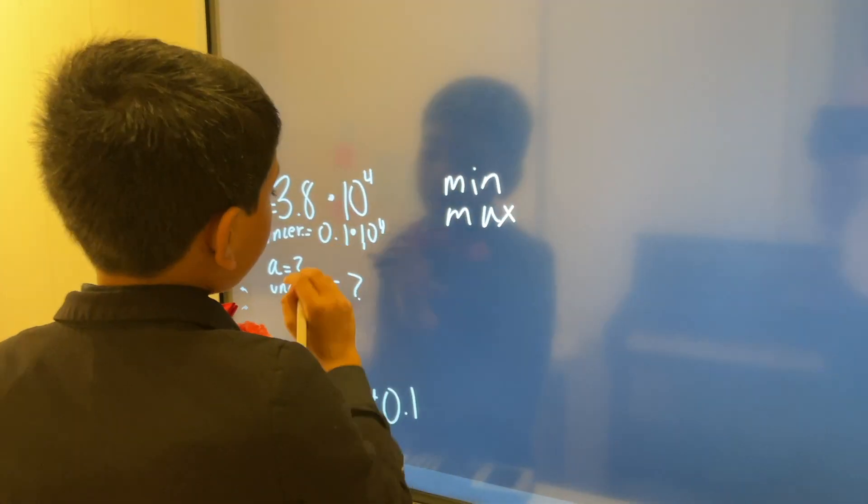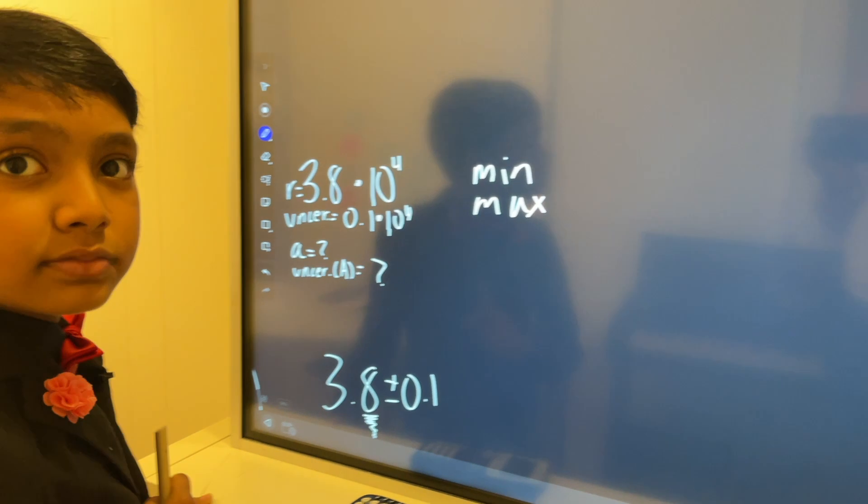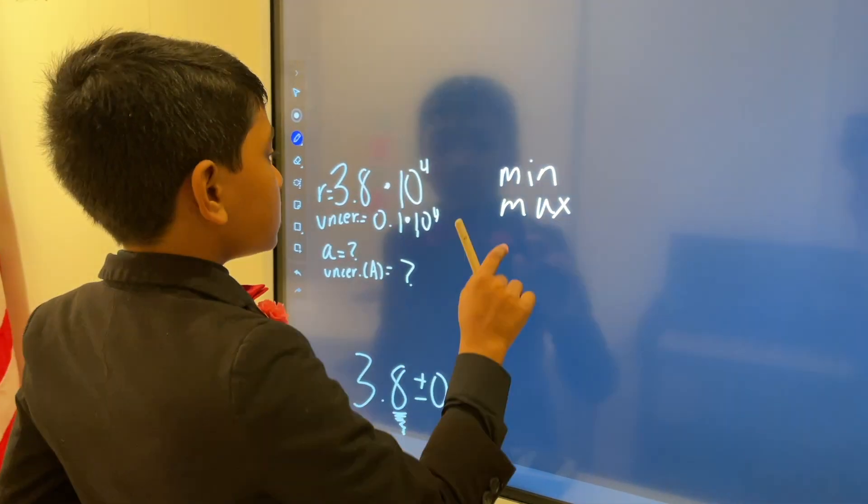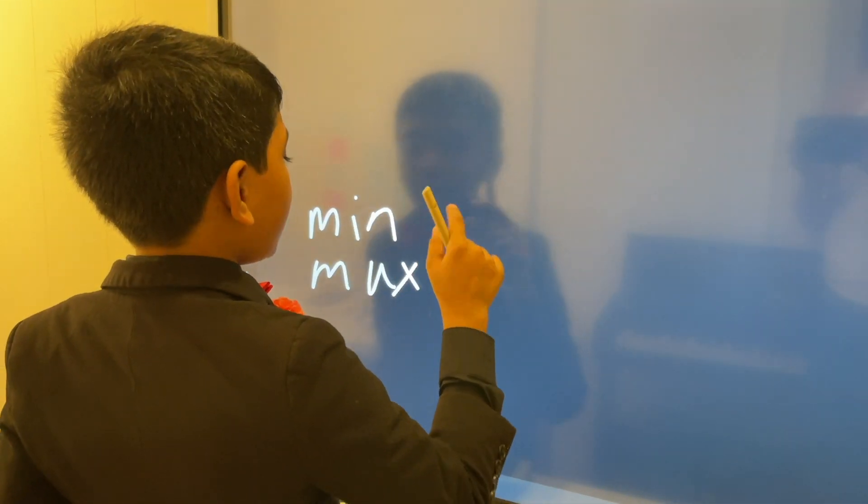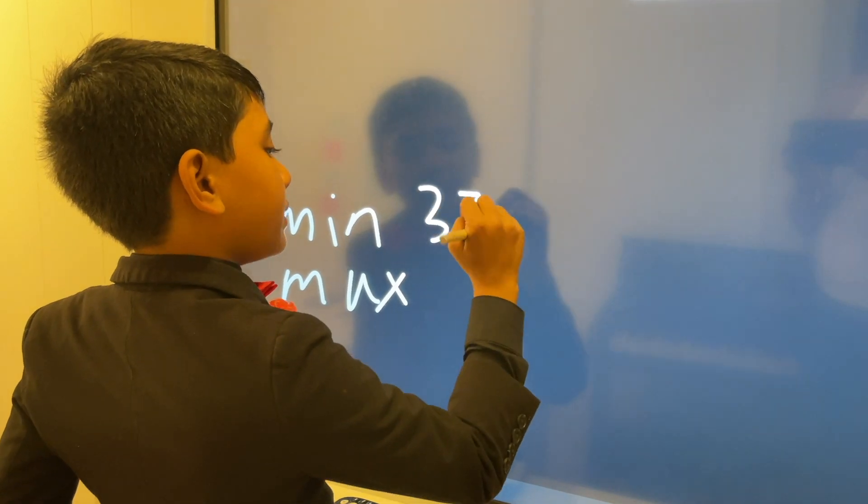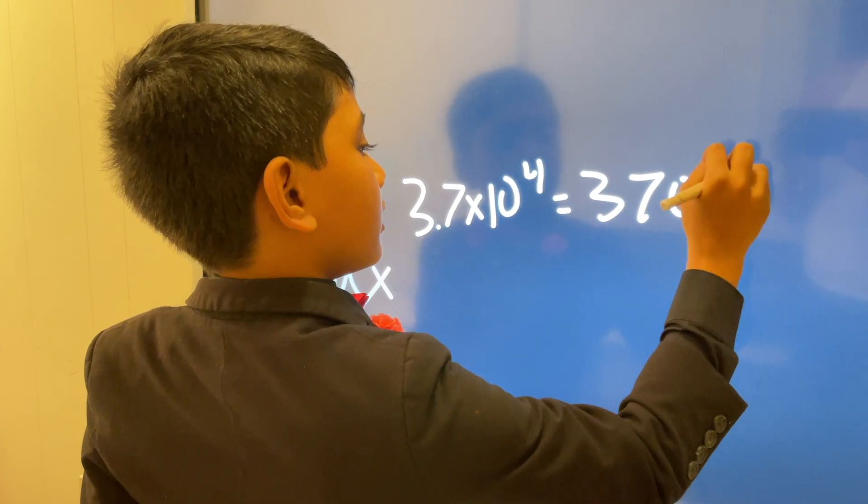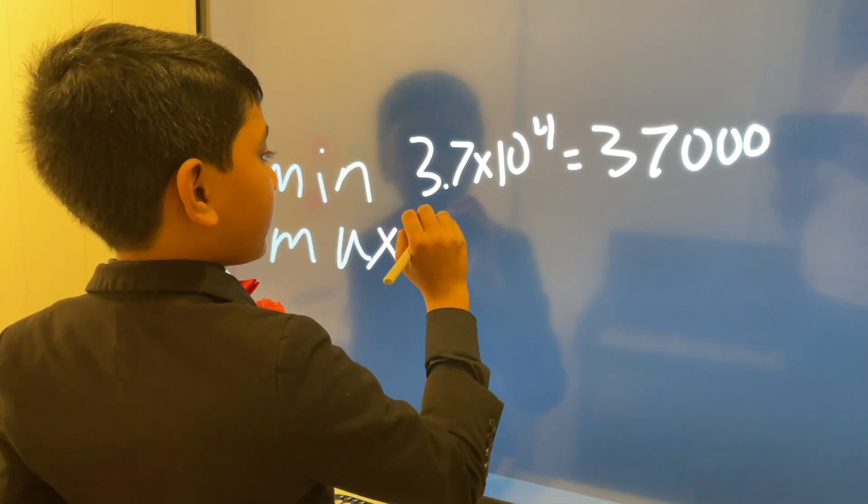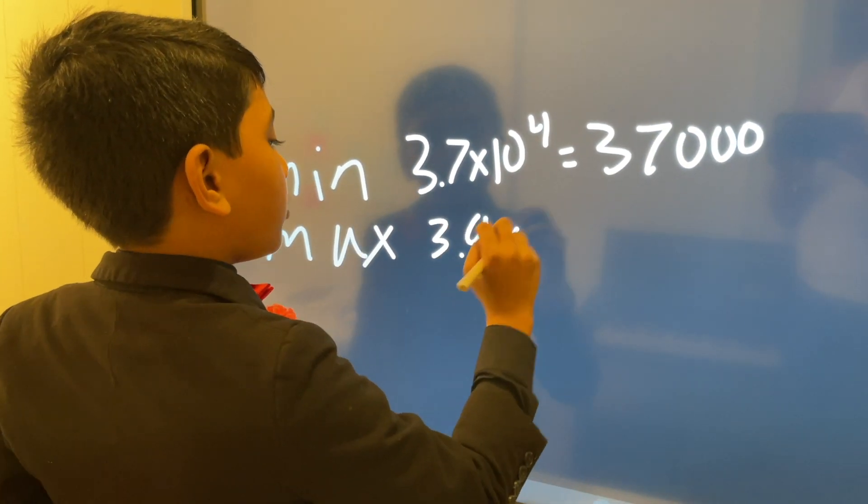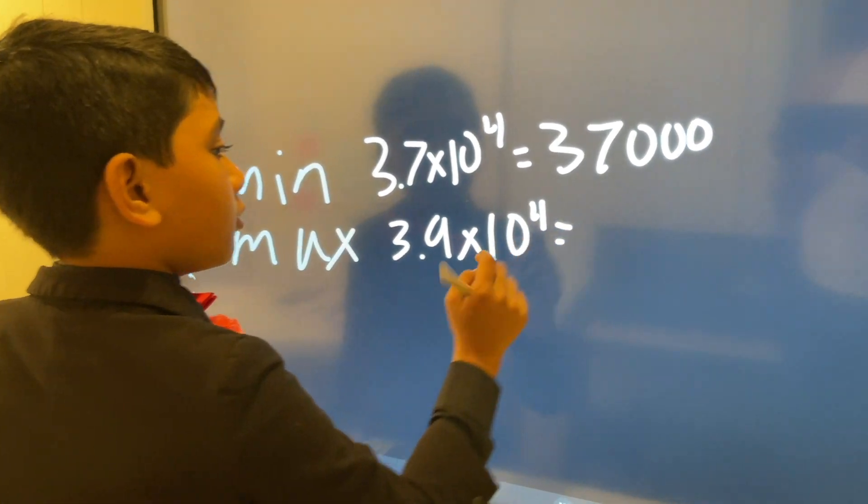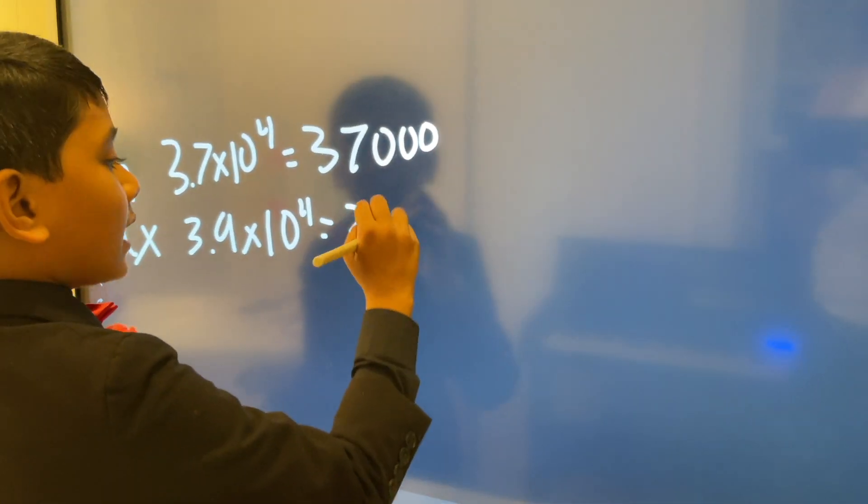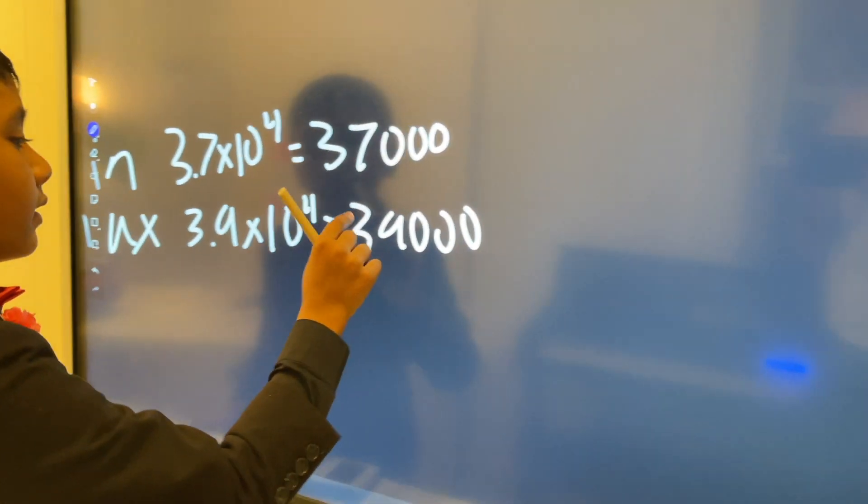Because you're uncertain to the degree of 0.1 times 10 to the 4th power. So, that means that at the minimum, it has to be 3.7 times 10 to the 4th. Or 37,000. You can write that out. And at the maximum, that's 3.9 times 10 to the 4th. Which you can write out as 39,000.